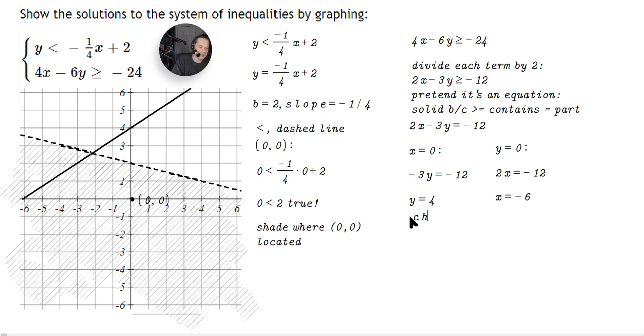I'm going to, again, just test with the simplest form you can find. Zero comma zero. So let's do it. I'm going to have four times zero minus six times zero. This is greater than or equal to negative 24. So we're going to get zero is greater than or equal to negative 24. That's certainly true. Since that is true, that means you're going to shade, again, where we have the point zero zero located.